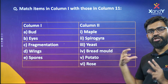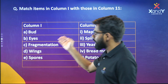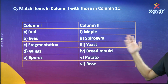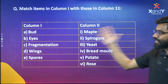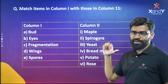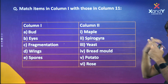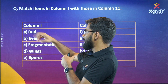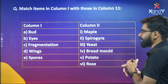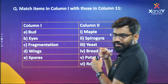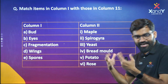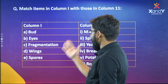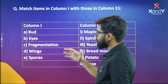We have done the methods of sexual reproduction here, so we can answer these. We can learn about seed dispersal. One method is Budding. Then there are Eyes of the Potato, which is Vegetative Propagation. Then Fragmentation and Spores.